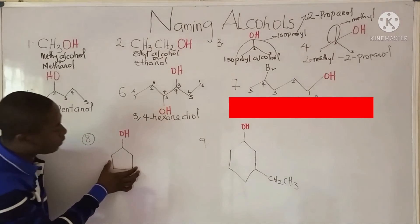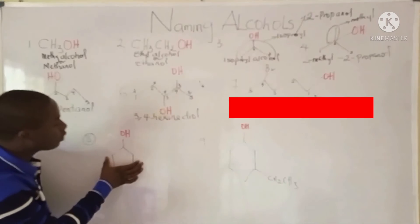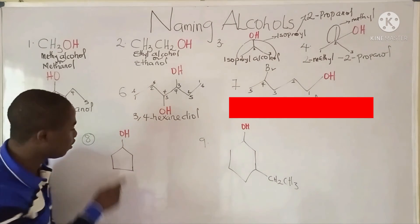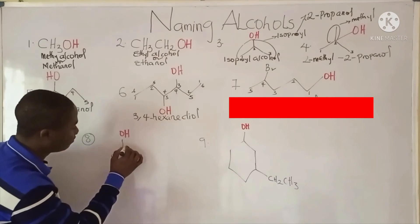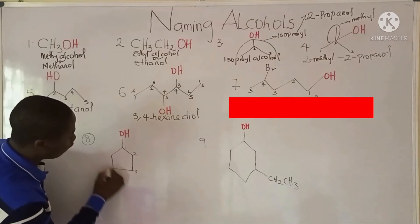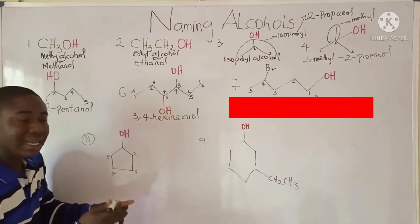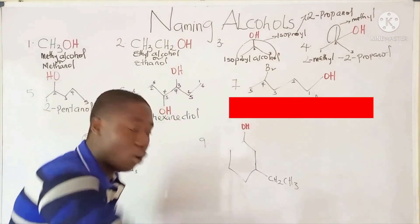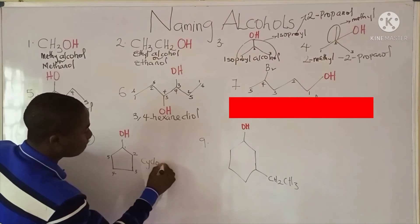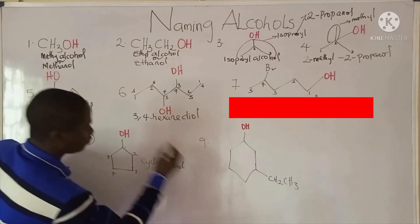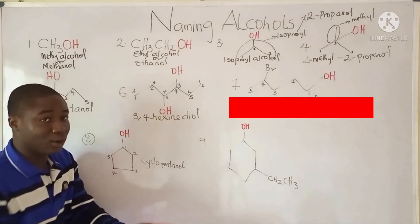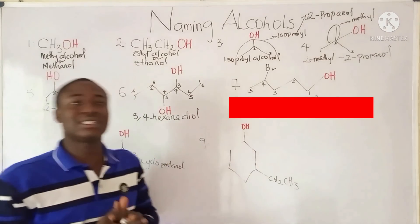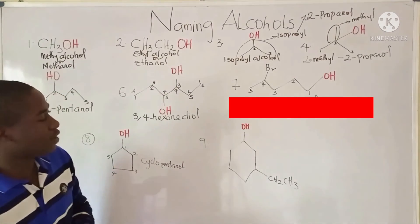Question 8: this compound is a cycloalkane attached to an alcohol. This cycloalkane is called cyclopentane because it has 5 carbons: 1, 2, 3, 4, and 5. Since there is an OH group attached to the cyclopentane, it becomes cyclopentanol. Sometimes you can say 1-cyclopentanol, but it is not really necessary when there is just one OH group. If there is another substituent, then you need to be specific about the number.